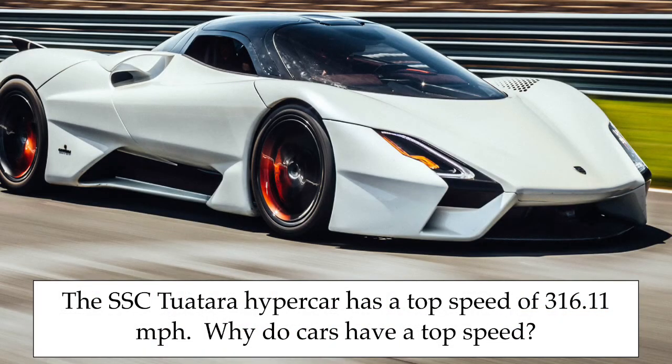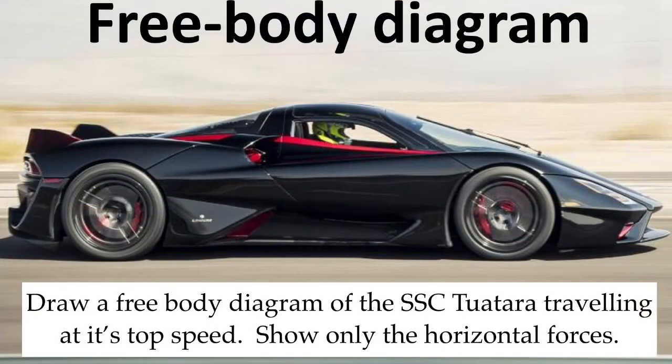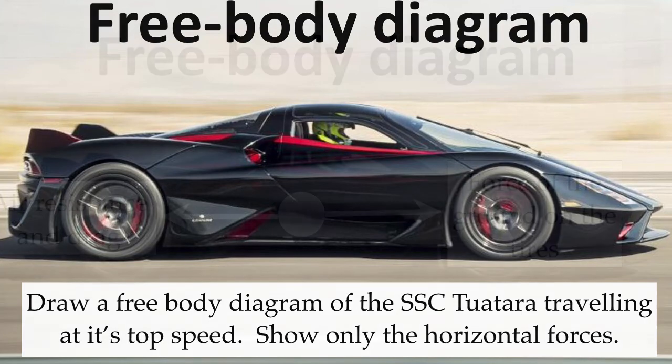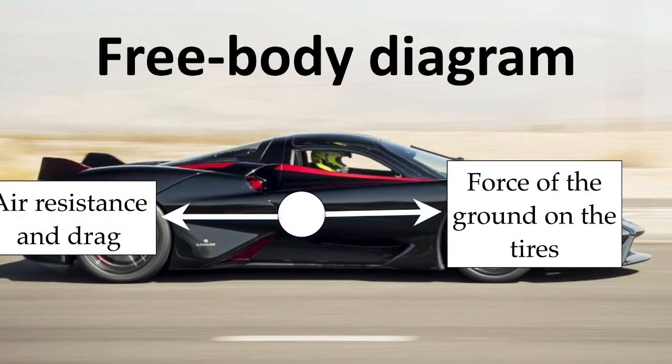The SSC Tuatara hypercar has a top speed of 316 miles per hour. But why do you think sports cars have a top speed? To help you understand this, I'd like you to draw a free body diagram of a car travelling at its top speed. You only need to include the horizontal forces acting on it. Pause the video now while you do that. You should have one force going forwards, either labelled thrust from the engine or force of the ground on the tyres, and then an equal and opposite force going backwards for air resistance and drag. Because there are two equal and opposite forces acting on the same object, the overall resultant force will be zero and therefore there should be no acceleration. So this is the car at its maximum speed.